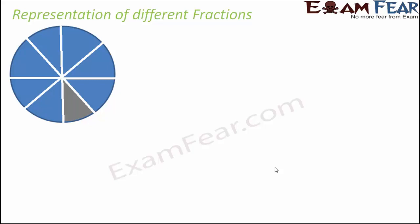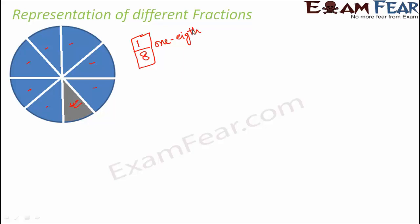Here you see a circle divided into 8 equal parts, and some part of the circle is shaded. We want to find what fraction of this diagram is shaded. The shaded part is in black or gray. One part out of eight parts is shaded, so we can say that 1/8 of the circle is shaded.